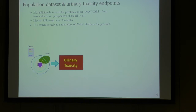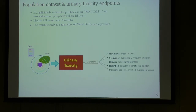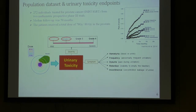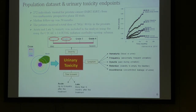The population dataset I used consists of 272 patients treated with IMRT or IGRT, coming from two multicentric prospective trials. The mean follow-up was 50 months, and the dose delivered to the prostate was either 78 or 80 Gy. The endpoints studied are divided based on the symptom — hematuria, frequency, dysuria, retention — and also based on severity: grade one and grade two toxicities. Regarding timing, events before six months were considered acute toxicity, and later events as late toxicity — specifically five-year late toxicity.